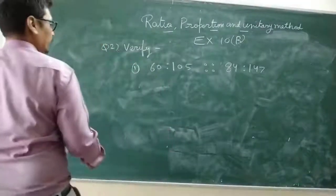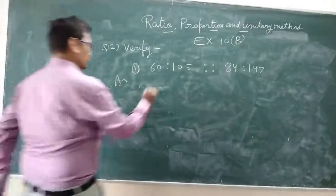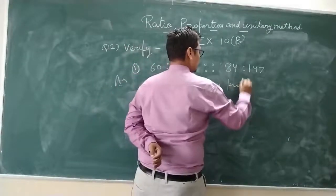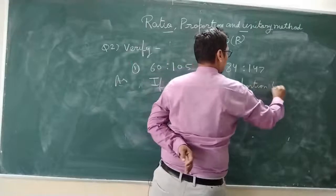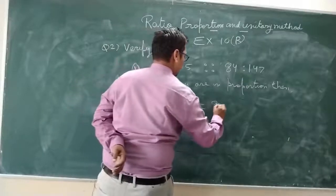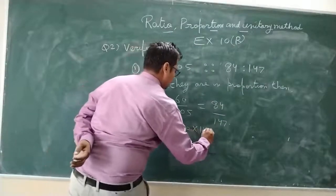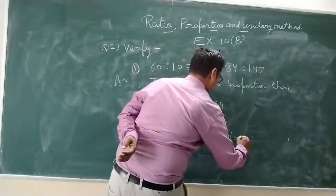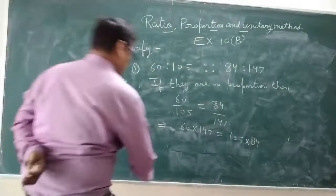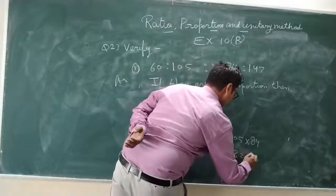Verify: 60 is to 105 equals 84 is to 147. If they are in proportion, then 60 upon 105 should equal 84 upon 147. Cross-multiplying, 60 multiplied by 147 equals 105 multiplied by 84. This gives 8820 on both sides, so they are indeed in proportion.